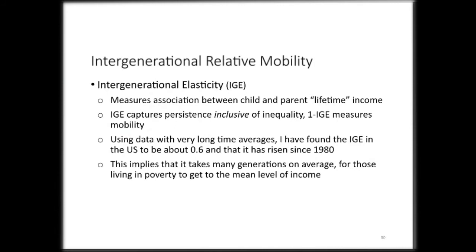In terms of the intergenerational elasticity, you can think of that as measuring the statistical association between a child's income and their parents' income. Here we're ideally thinking about lifetime income measured over the entire life cycle — in an ideal world, income measured over ages 25 to 55, something like that. That coefficient between child income and parent income is often called the intergenerational elasticity when income is measured in logs, and that measures persistence. We take mobility as one minus that level of persistence.